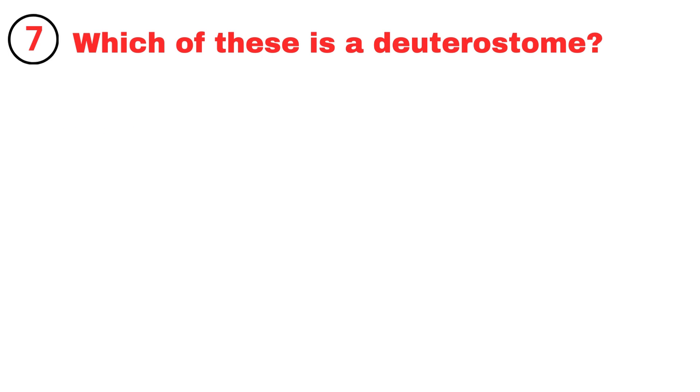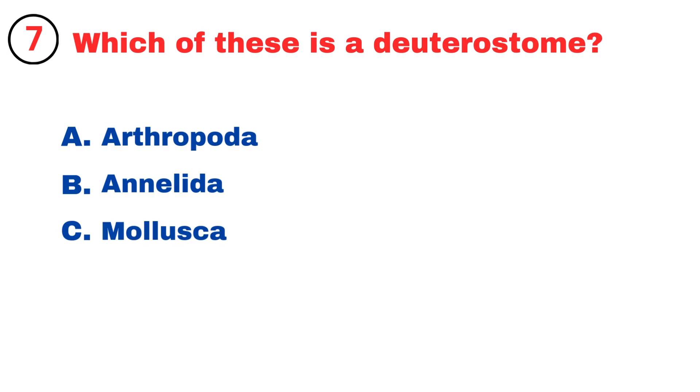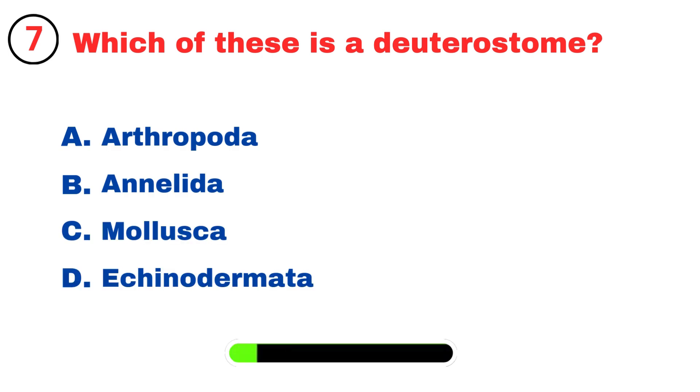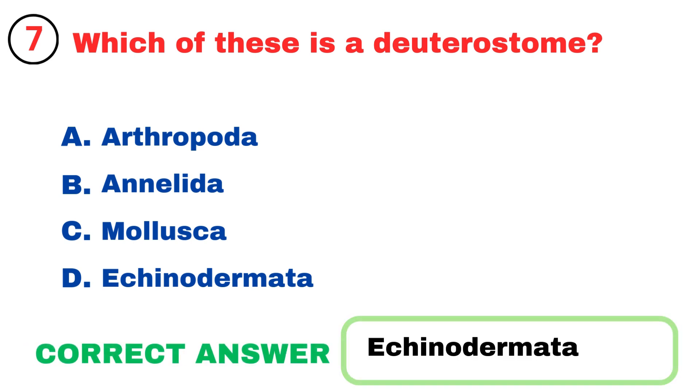In which of the following animals does respiration occur through tracheal tubes? Grasshopper. Which of these is a deuterostome? Echinodermata.